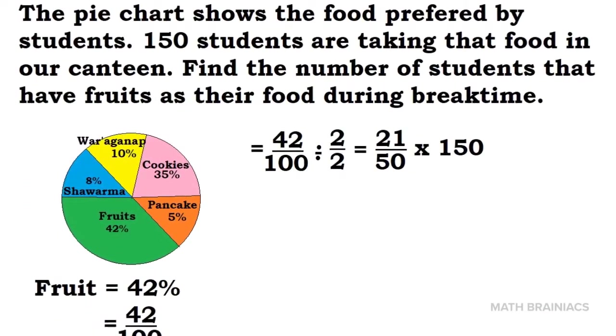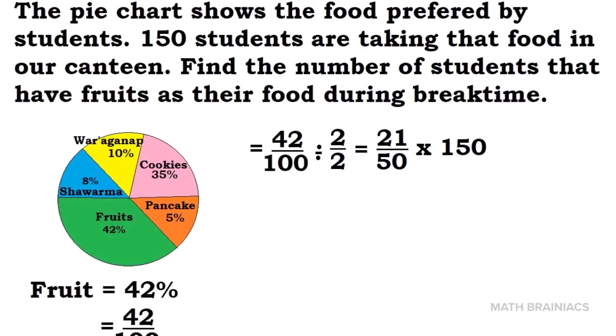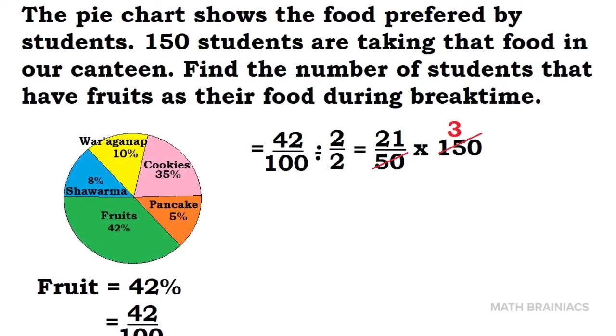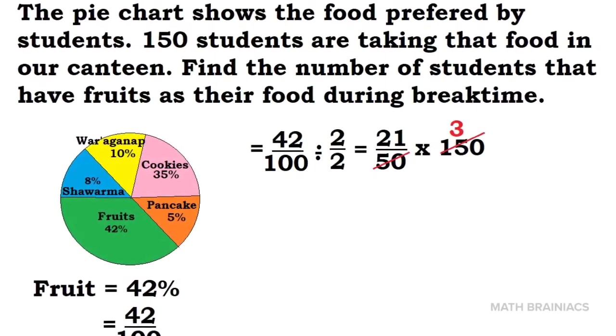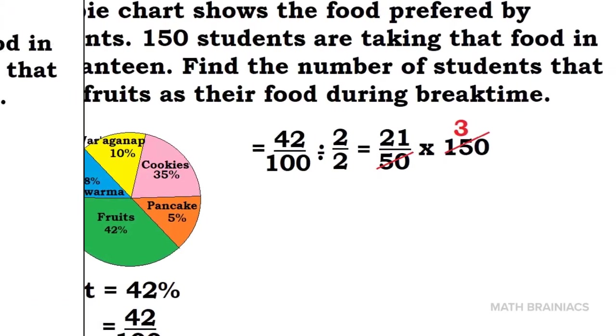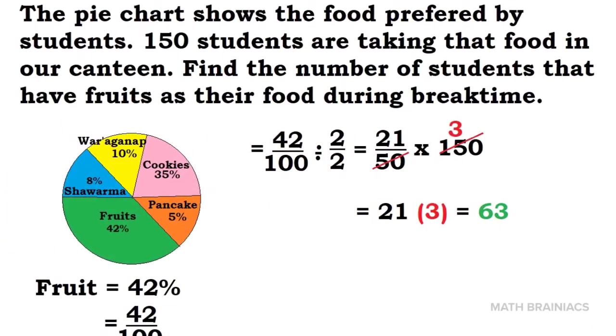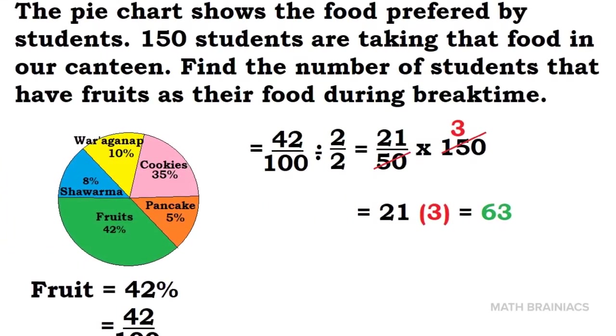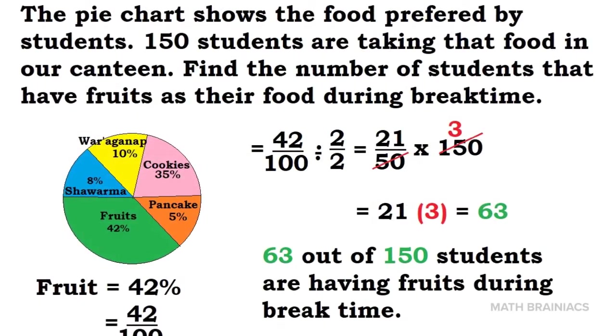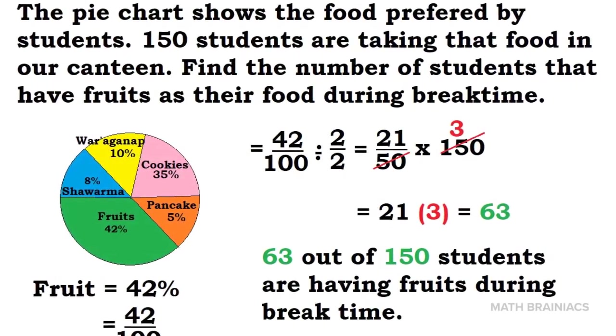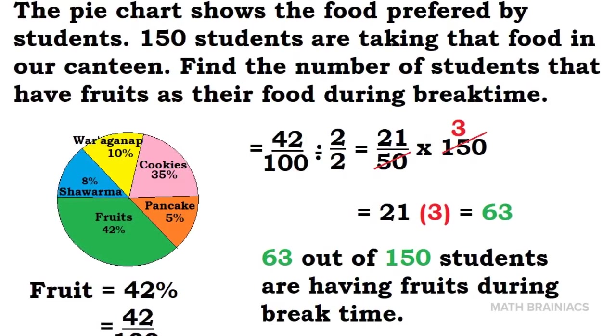We can now multiply 150 with 21 over 50. 50 in 150 is 3. To simplify it, 21 times 3 will give us 63. Accordingly, 63 out of 150 students are having fruits during break time.